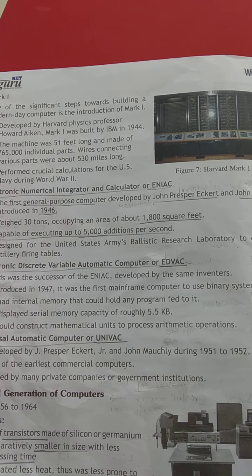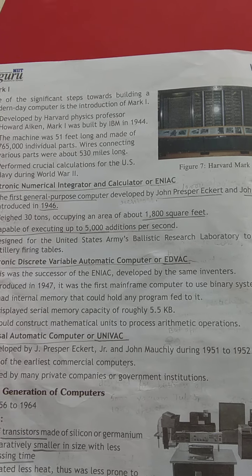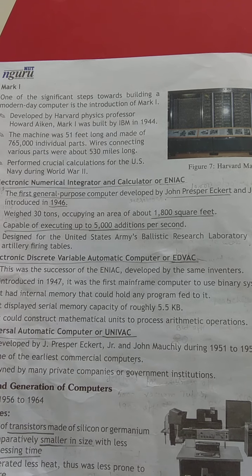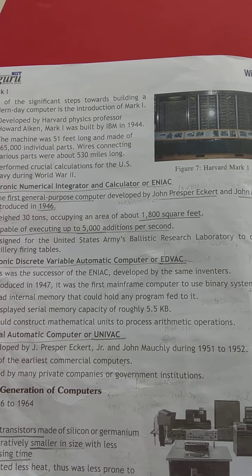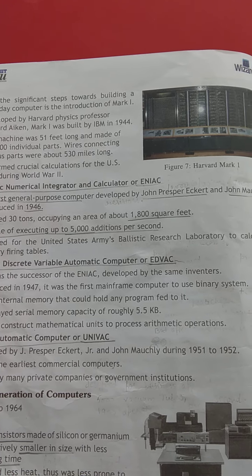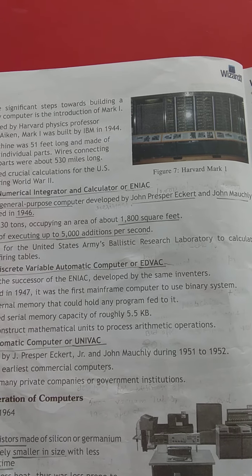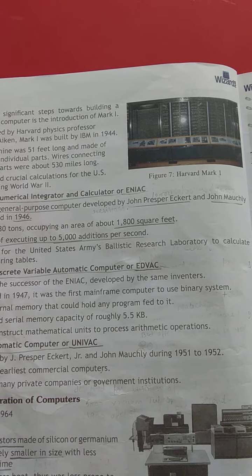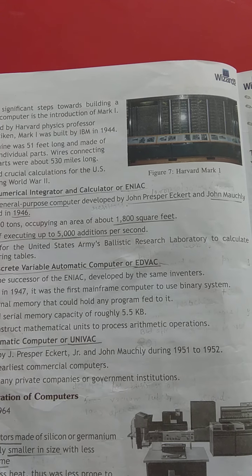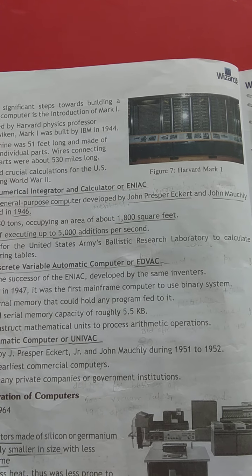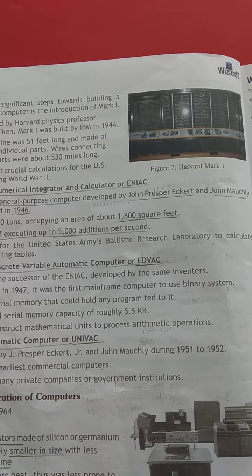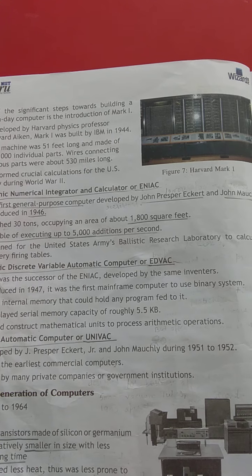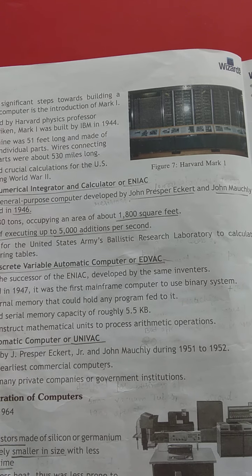ENIAC was developed by John Eckert and John Mauchly in 1946. It could perform 5,000 additions at one time — executing 5,000 additions per second. ENIAC carried 20,000 vacuum tubes, 10,000 capacitors, and 70,000 registers, and was able to solve large calculations and large numerical problems.